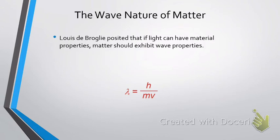Louis de Broglie, he came next and he realized that if light can have material properties, like mass, what we've been talking about before, then matter, which has mass, should also exhibit wave properties. It comes with the de Broglie wavelength equation. And so, here we have lambda, which is the de Broglie wavelength, is equal to Planck's constant divided by the mass times its velocity.